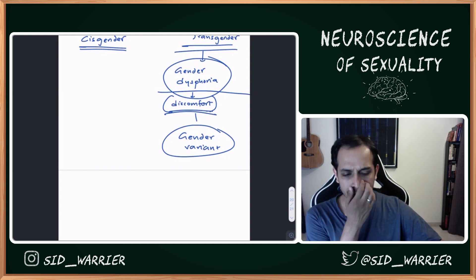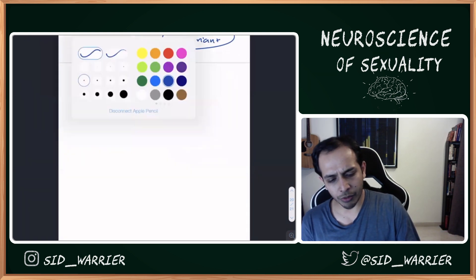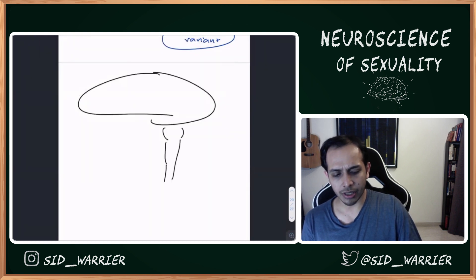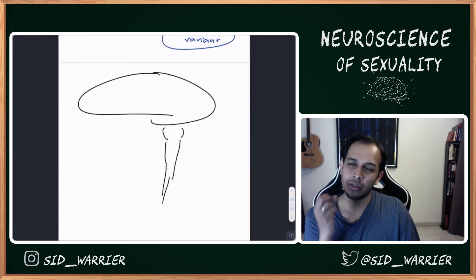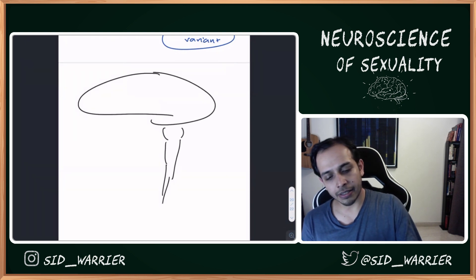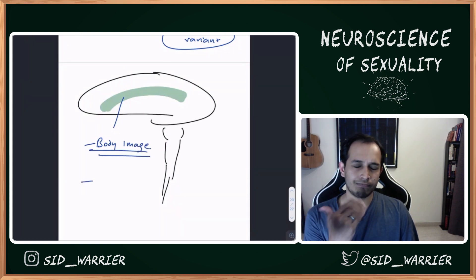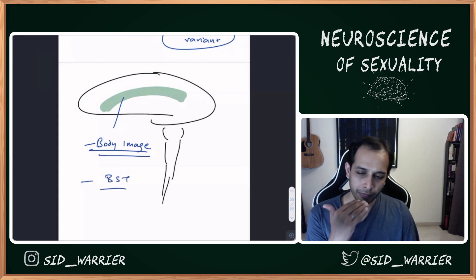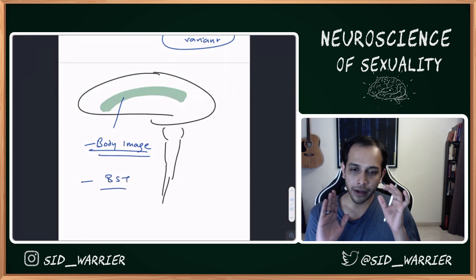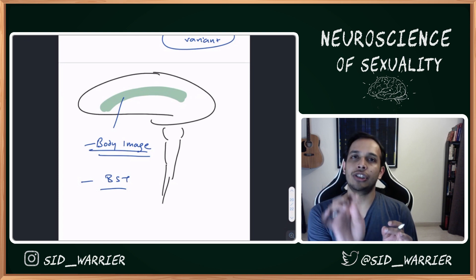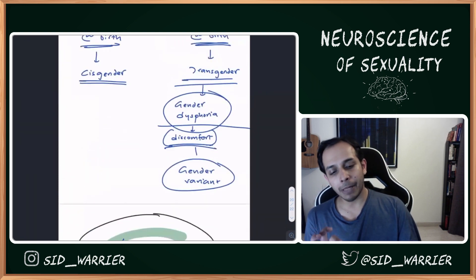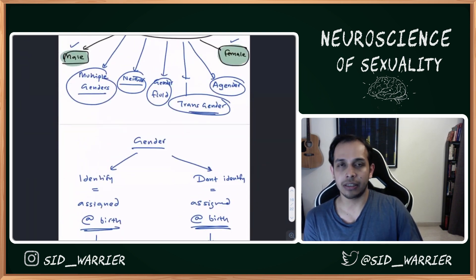Just to give you a brief idea about the neurobiology of it: the area of the brain that deals with body image is involved, and a couple of other areas called bed stria terminalis. There are some neurobiological differences in people who identify as having gender dysphoria.